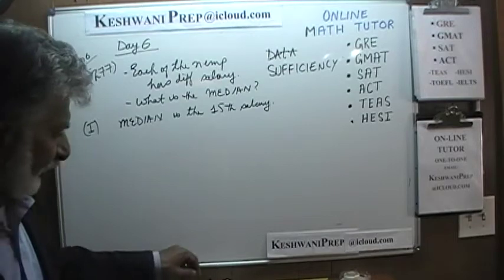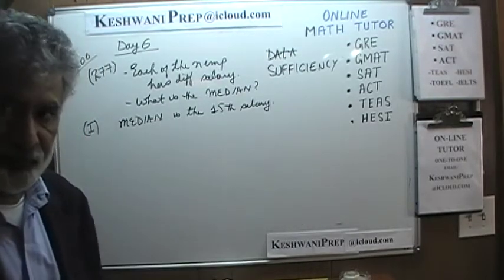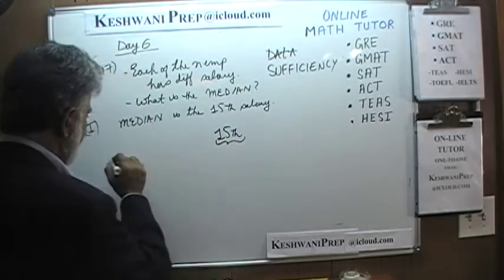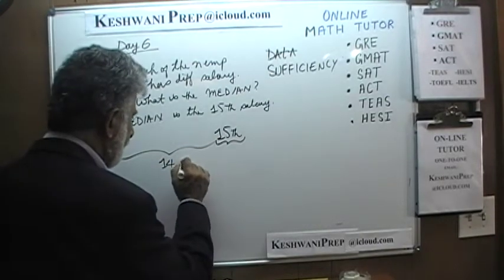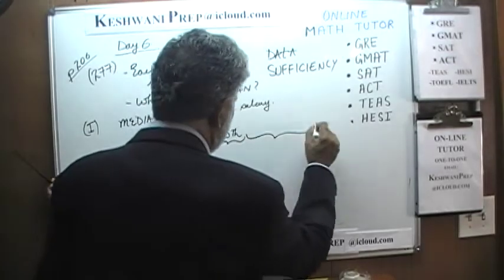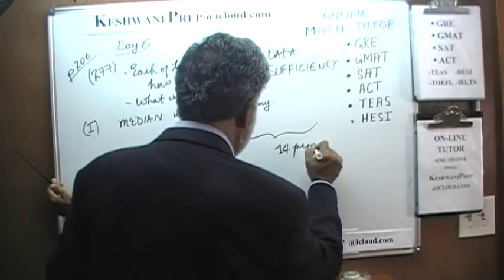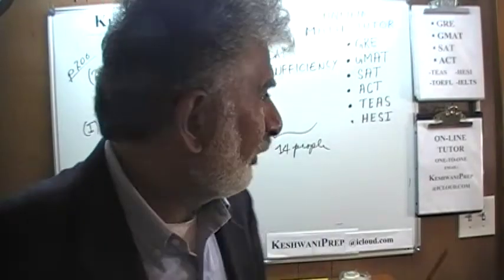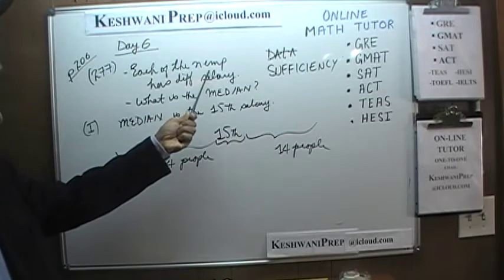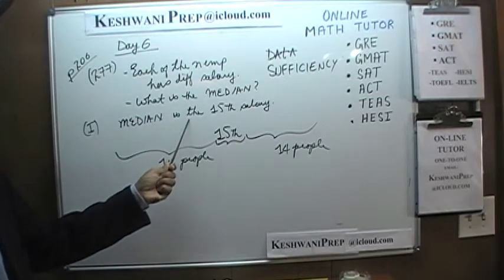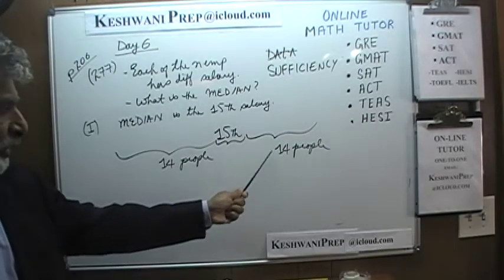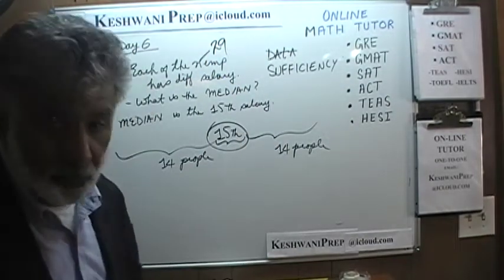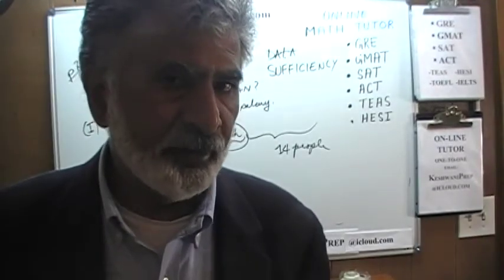What do you suppose we can get out of that? The median happens to be the 15th salary. What that means is that there are 14 people below the median and 14 people above it. Somebody told you the median is the 15th salary — that tells us immediately that N is 14 plus 14 plus 1, which is 29 people. That is useful information, but it's not sufficient. Statement 1 by itself does not enable us to find out what the median actually is.